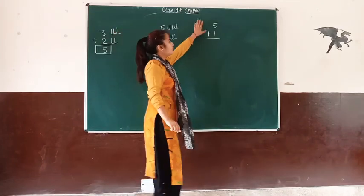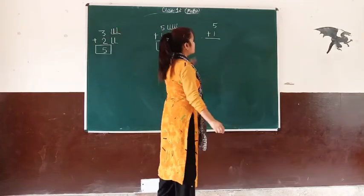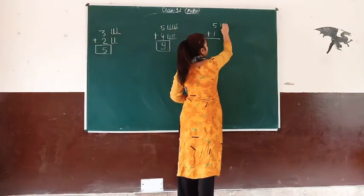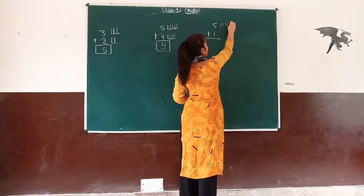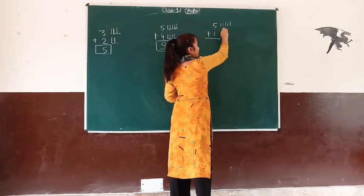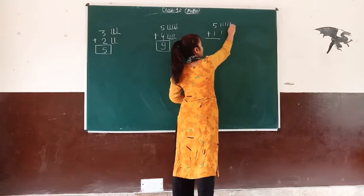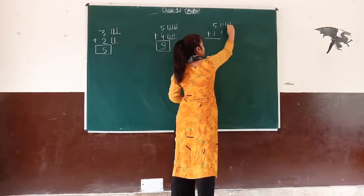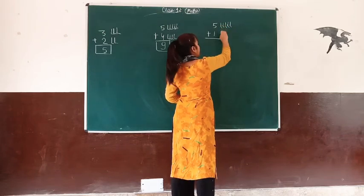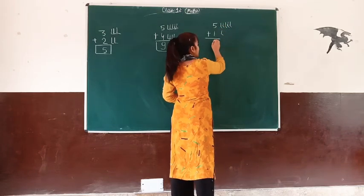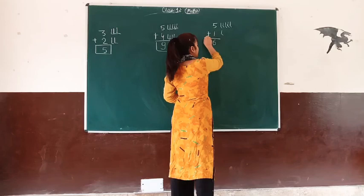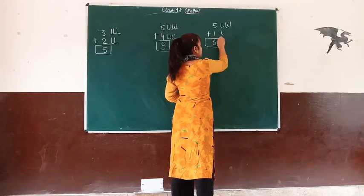Next step: 5 plus 1. We draw 5 lines: 1, 2, 3, 4, 5. Then we take 1 more. So we have: 1, 2, 3, 4, 5, 6. We have 5 plus 1, it is 6.